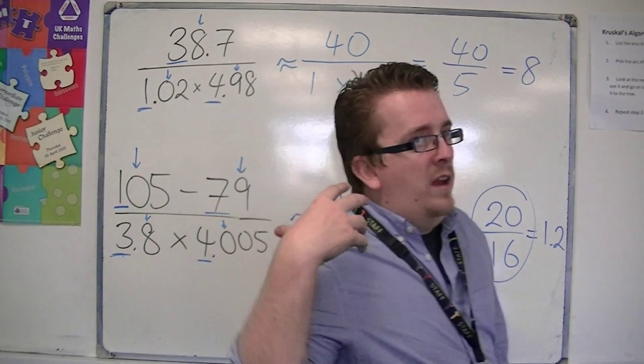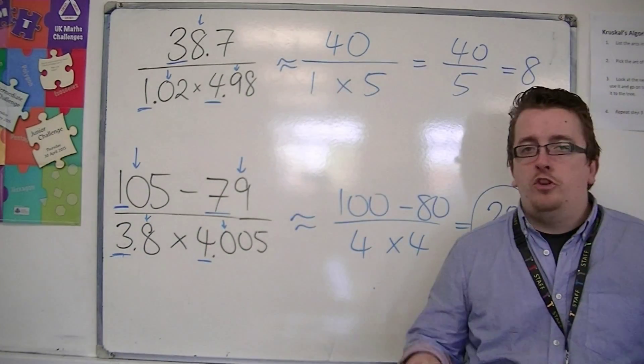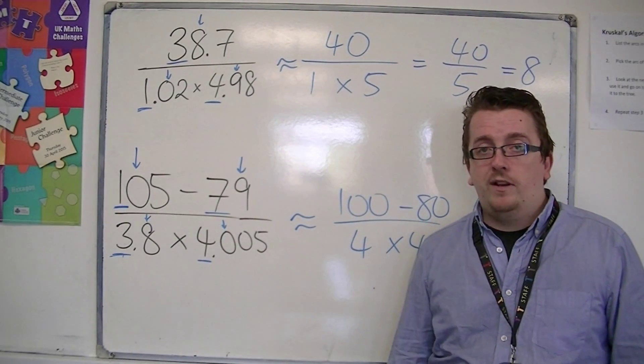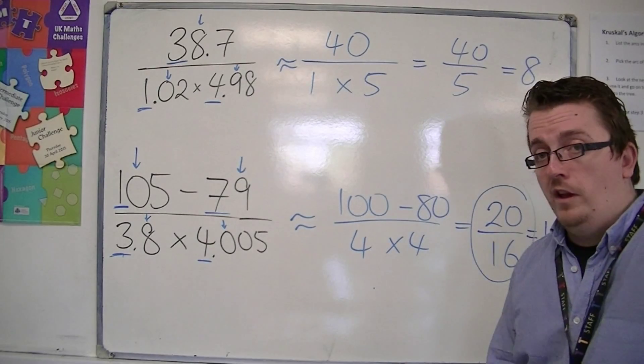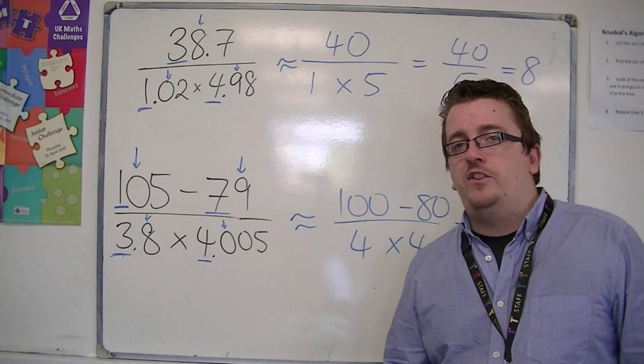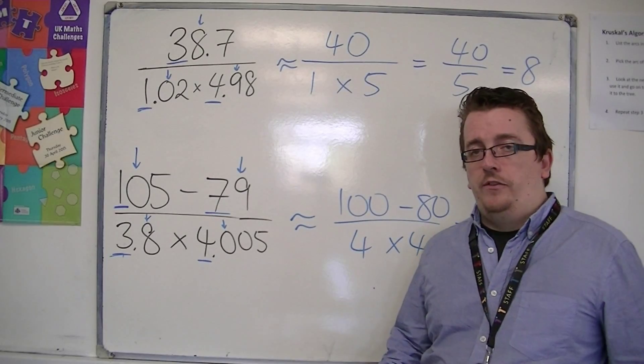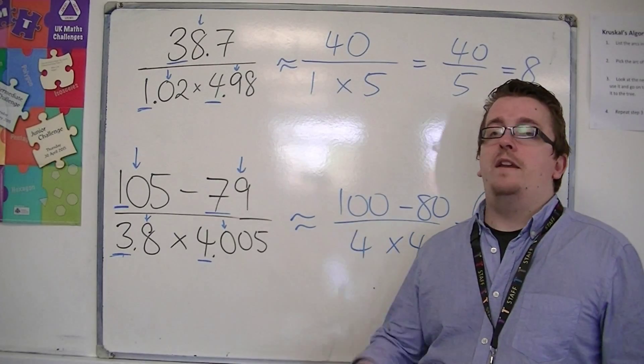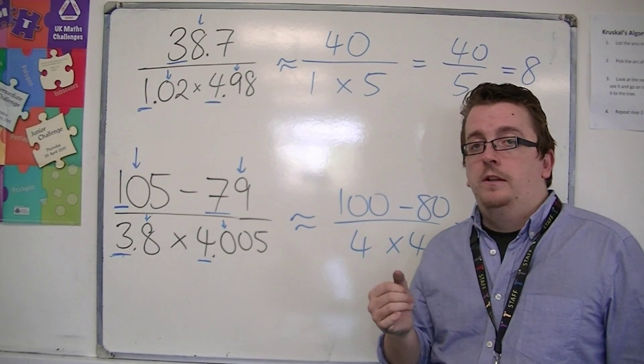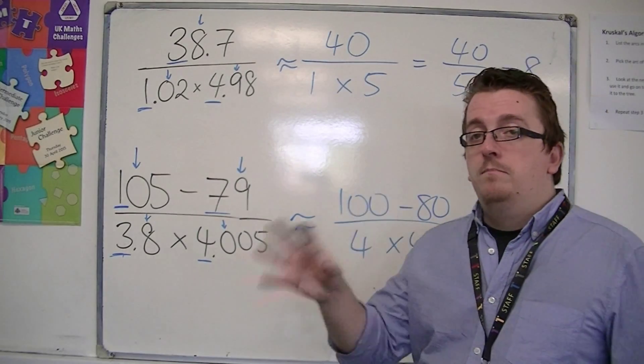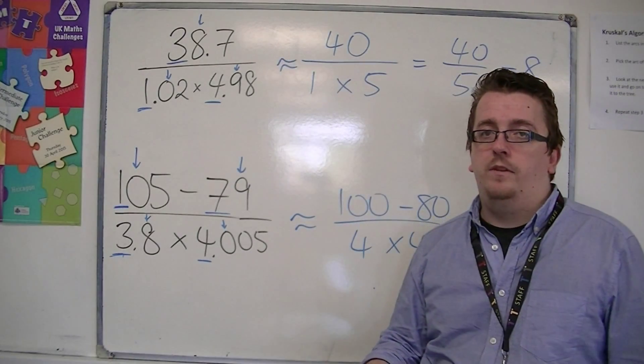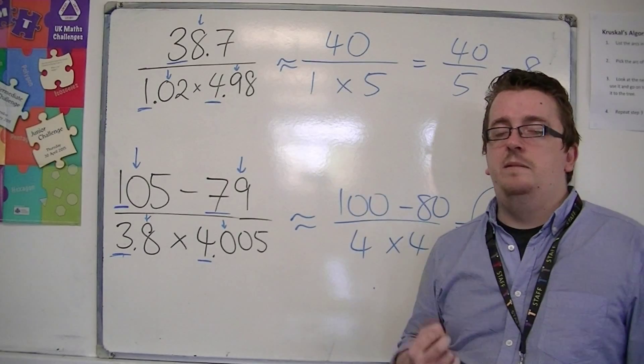So if in any of these examples you've just plugged it into the calculator, and this could come up in a calculator paper more likely to try and catch you out, if you plug any of these into your calculator and just get an answer and write that down, you will get no marks because you have not done any estimating at all. The estimating must come from estimating each of the numbers in the calculation and then making it a simpler calculation.